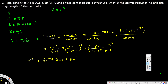We know that volume equals x cubed for a cube. We are interested in the edge length x. To solve for x, we take the cube root of the volume — that is, raise it to the power of one-third. Taking the cube root of 6.759 times 10 to the power of 7 picometers cubed gives us 407.3 picometers. So the edge length x equals 407.3 picometers.